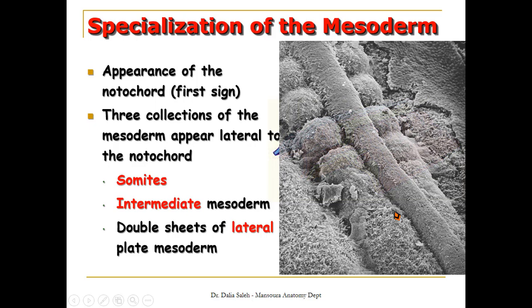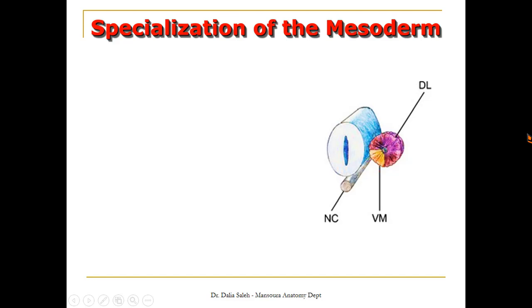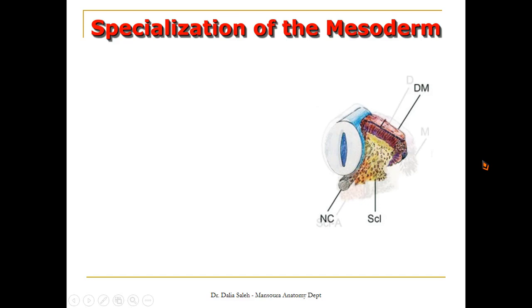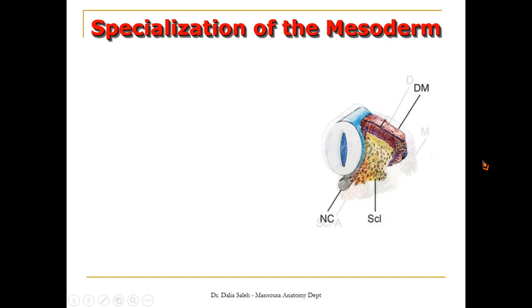What concerns us in the development of the vertebral column is the somites, or the paraxial mesoderm. The somites differentiate as follows: the dorsolateral part forms the dermatome and myotome — we call it the dermomyotomal part — and it forms the skin and underlying muscles. The ventromedial part is called the sclerotome, which will eventually form the vertebral column.